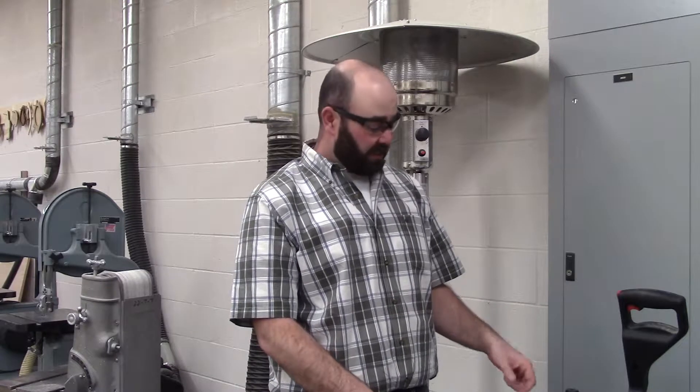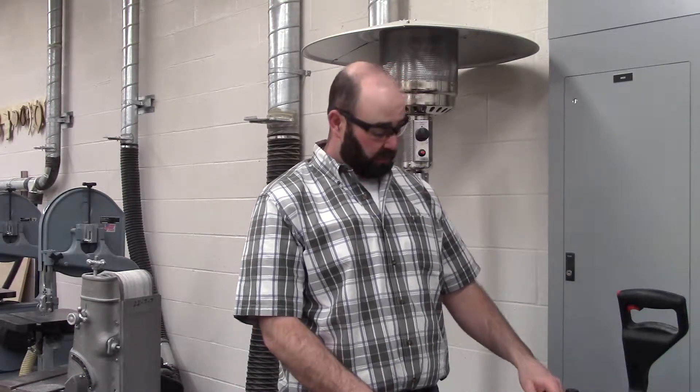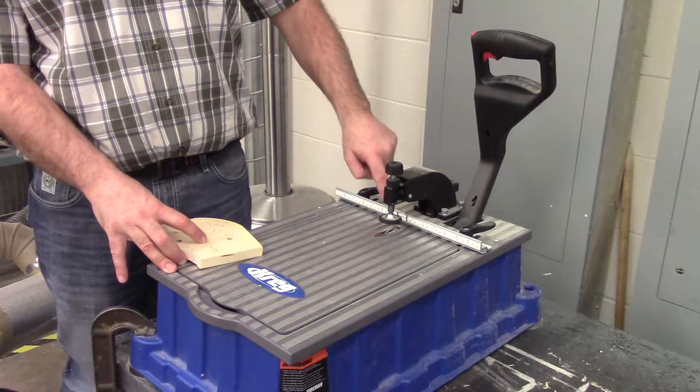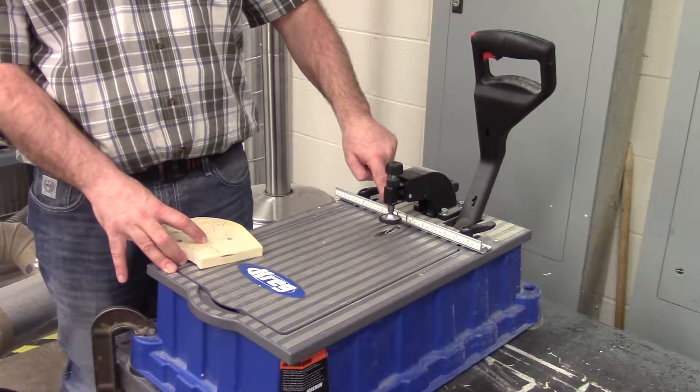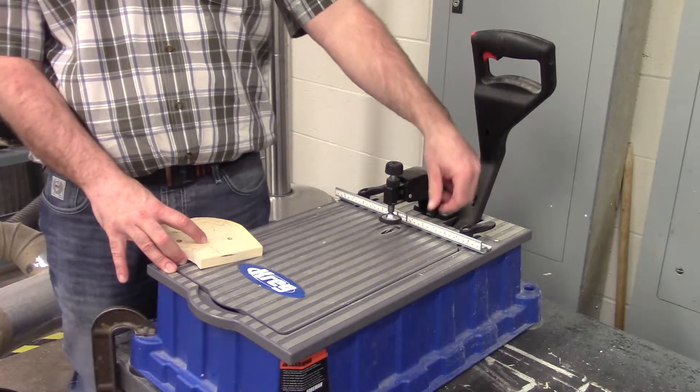Depending on what your project is, you will have to understand how to read this. For example, in the serving tray, you will put one one inch from each end. So you'll put the edge of your board at the one inch mark on each one.